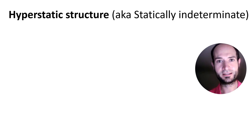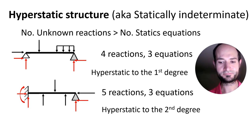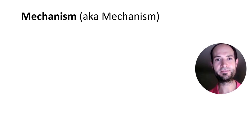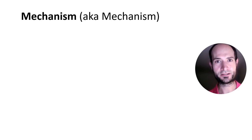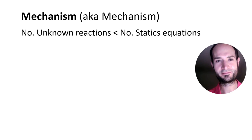If there are more restrictions — more supports, more reactions than three — then it is going to be hyperstatic. We will need additional methods to solve the structure, which I am not going to explain for now. And if the structure has less than three reactions, it will be a mechanism — it's not stable because it can move. So obviously we are not going to consider those for the scaffold.